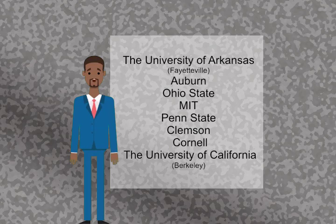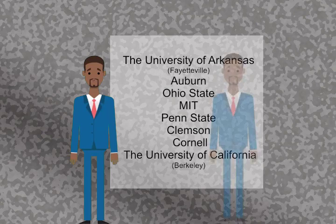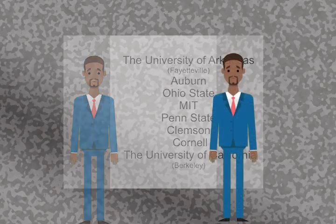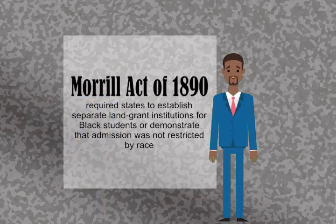People of color were often excluded from the educational opportunities provided in the Morrill Act of 1862 due to their race. The second Morrill Act of 1890, aimed at the former Confederate states, sought to rectify this discrimination.